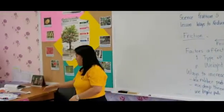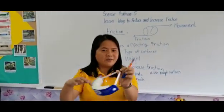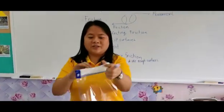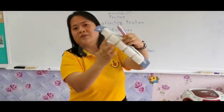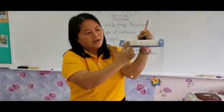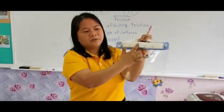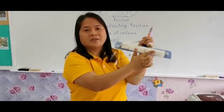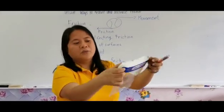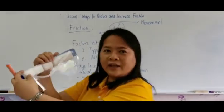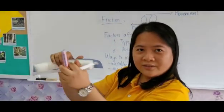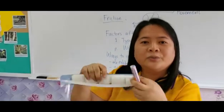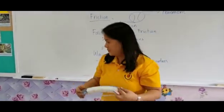Another example is a face shield. You can see this one has a sponge, and the surface of the sponge is rough. It increases the surface area, so when you put this on your head, it will stick to your head. These are the ways to increase friction.